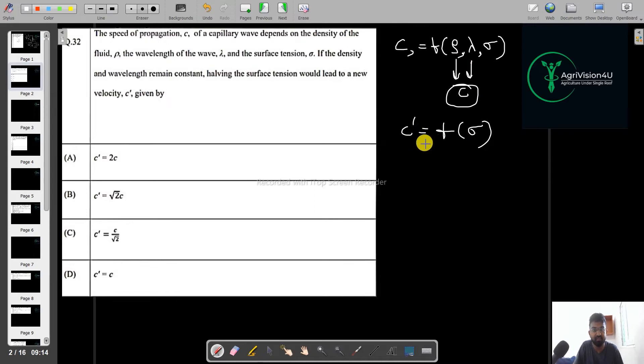If both are constant, then we can say that this thing is a function of sigma only. But by just here sigma by 2, then what changes we get in the C dash. For that, we have one formula. This topic is from the advanced fluid mechanics topic. And the formula for this is C equals K under root of sigma rho lambda.